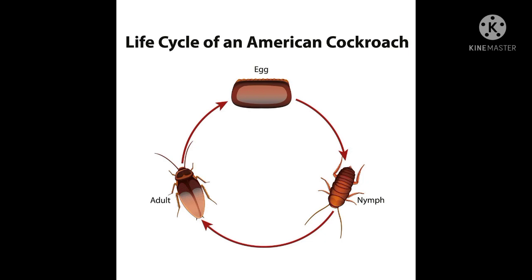From the eggs, when the egg gets hatched, small baby cockroaches come out, which are also known as the nymph. At this second stage, molting takes place — they shed off their skin many times, not just one time.